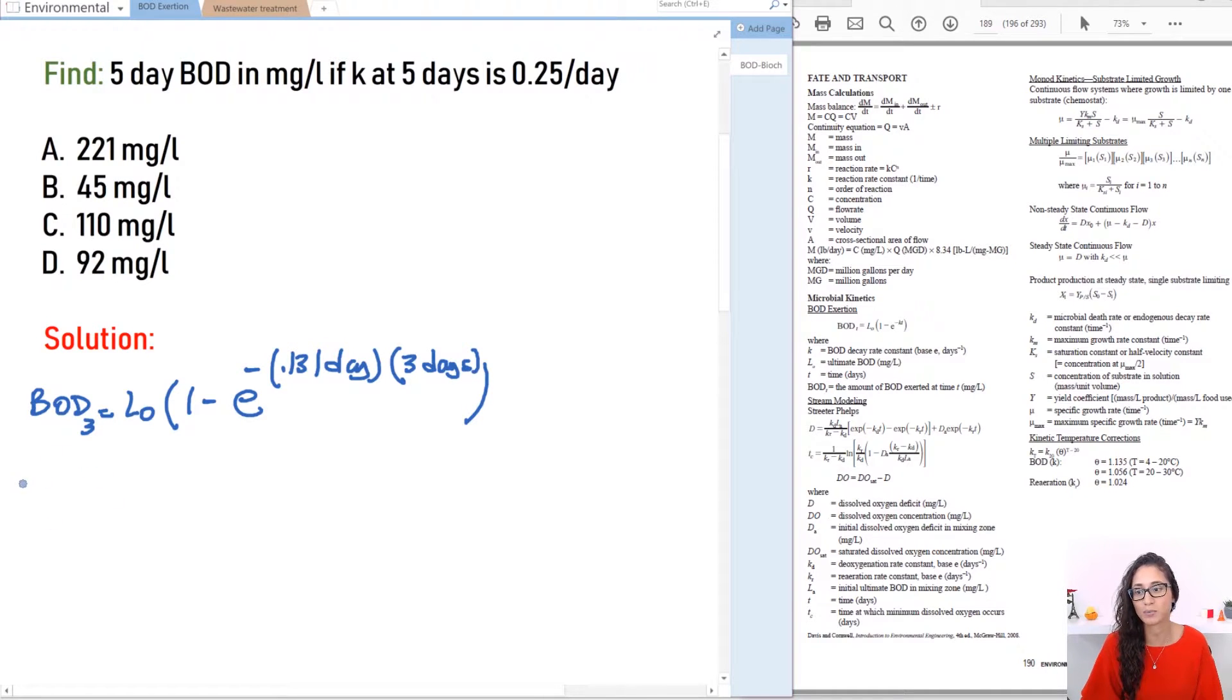Okay so let's do the same thing but this time for five days. So we have BOD at five is equal to L0 times 1 minus E to the power minus K is 0.25 per day times five days.